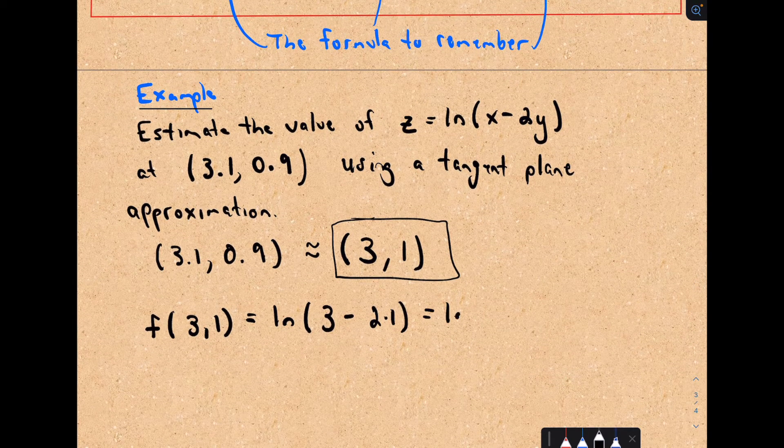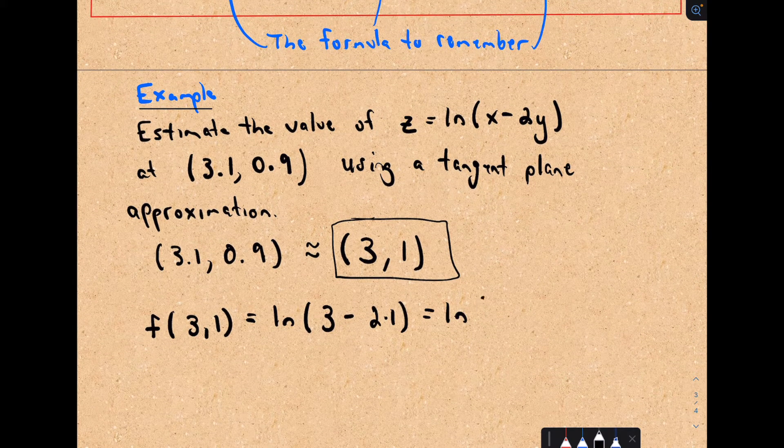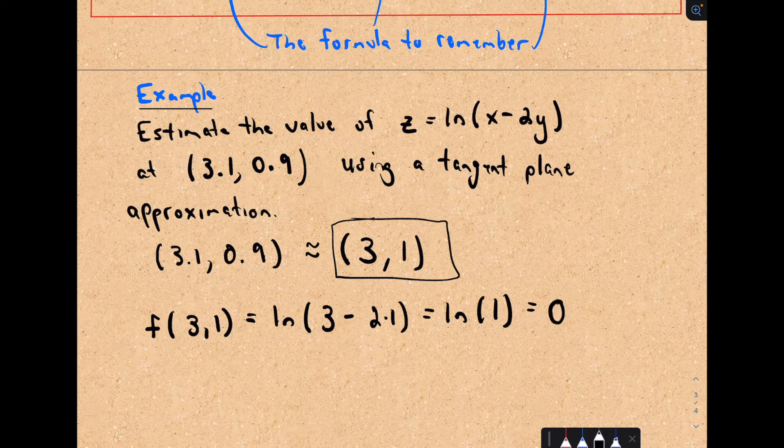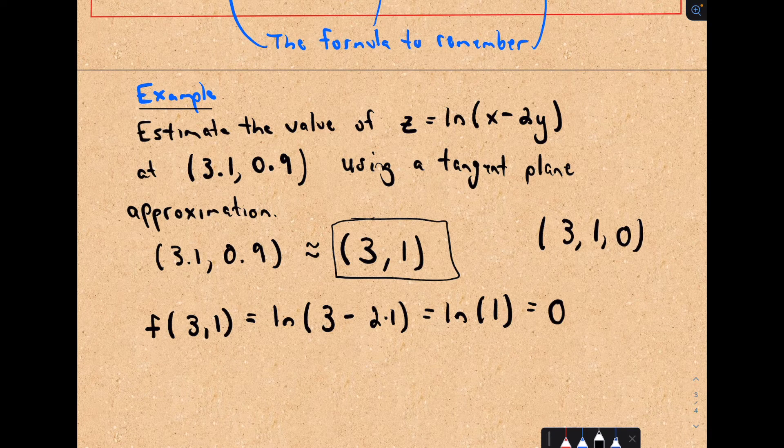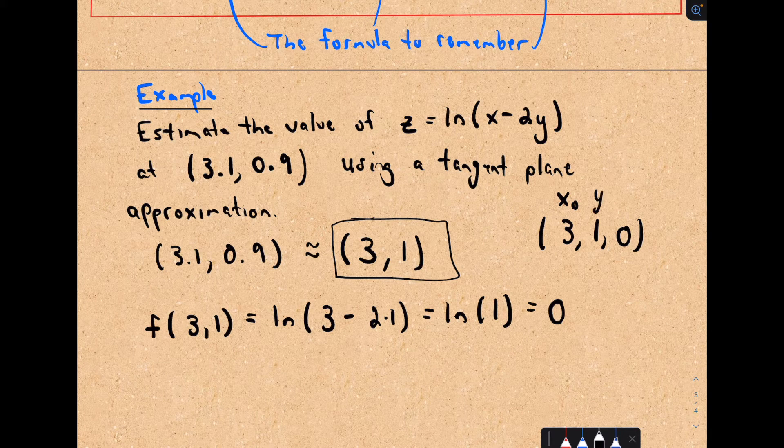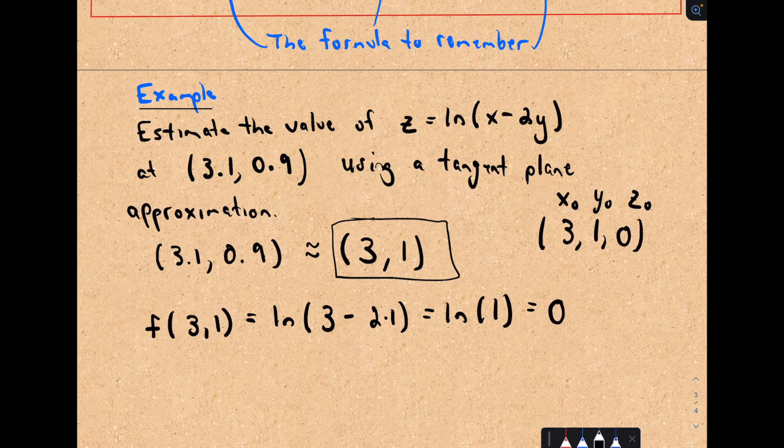So that's just going to be the natural logarithm of 3 minus 2, which is the natural logarithm of 1, which is 0. So I'm thinking about the point 3 comma 1 comma 0. That's going to be my x sub 0, my y sub 0, and our z sub 0.